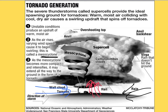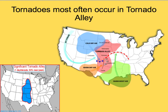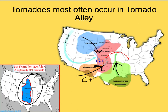A supercell thunderstorm is one that can last for many hours and has the possibility to produce a significant tornado. However, tornadoes themselves don't last long — they can last anywhere from a few minutes to as long as 30 minutes. Tornadoes most often occur in Tornado Alley, usually in spring and summertime, because we have converging air masses: warm moist air coming up, cold dry air, warm dry air — that's Continental Tropical, Maritime Tropical, and Continental Polar — all converging in one area, causing many tornadoes in Tornado Alley.